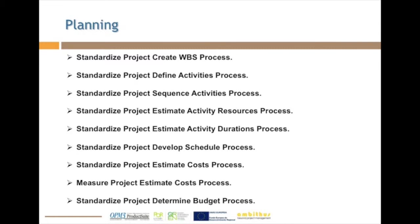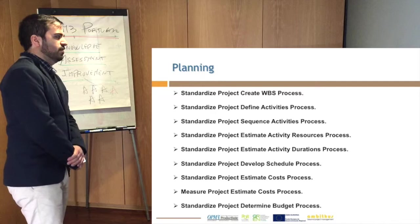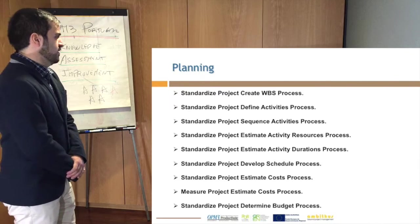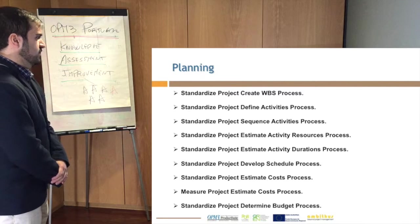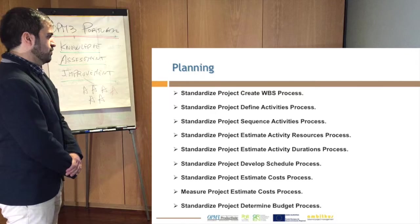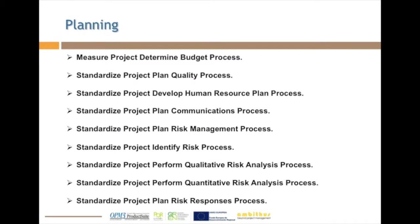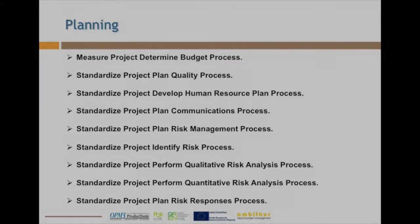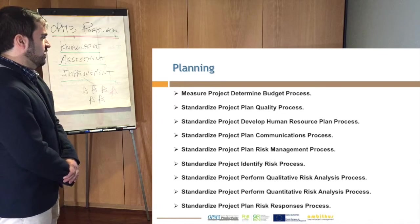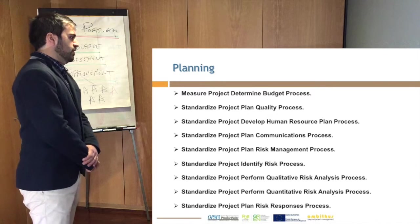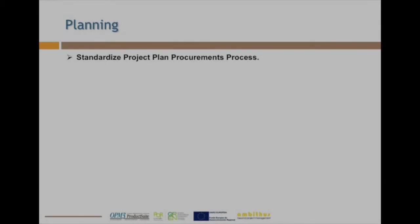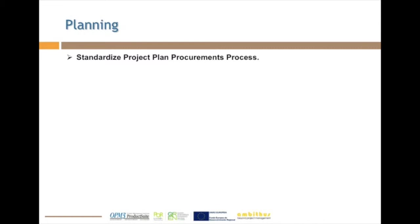We also recommend to standardize the WBS structure, the definition of activities, their sequence, the estimation of activity resources, and the estimation of activity durations. We also recommend standardization of the develop schedule process, standardization and measurement of estimated costs, and standardization and measurement to determine the budget. For plan quality, we recommend only standardization, as well as for the developed human resource plan, communication plan, risk management plan, identification of risk, analysis of risk, and risk responses — recommending to standardize all five risk processes. At the end of the planning stage, we also recommend standardization of the project procurement plan process.